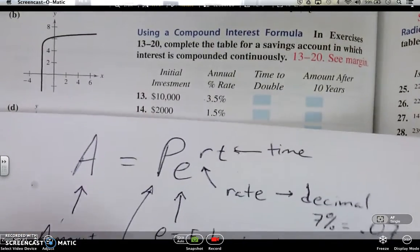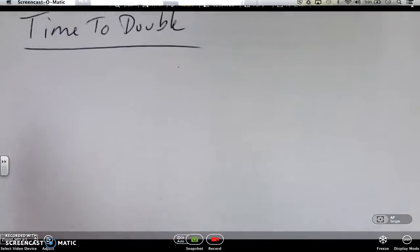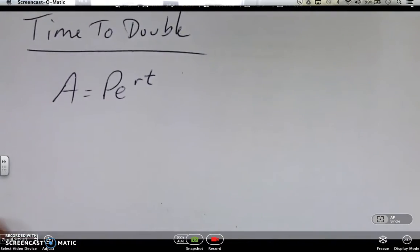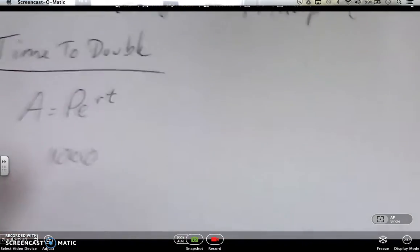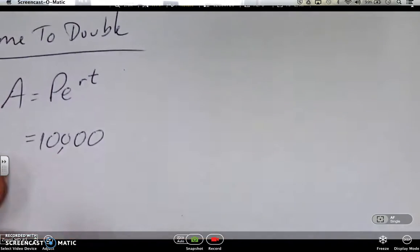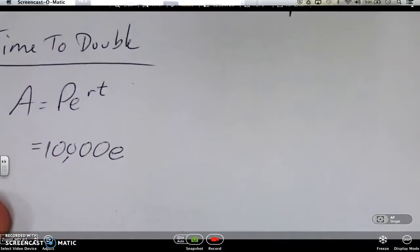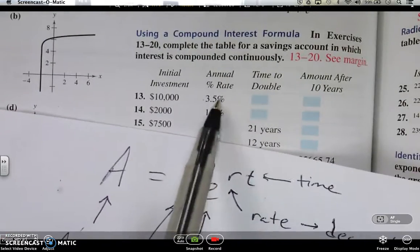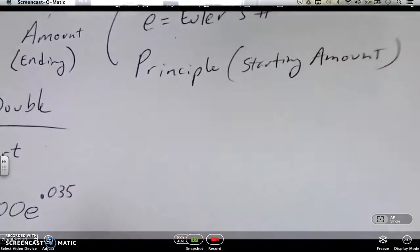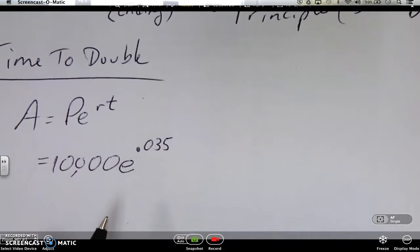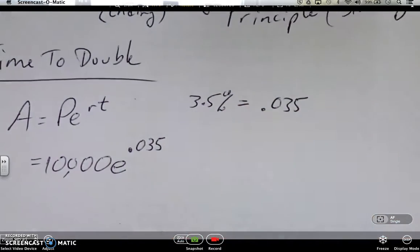First, we're going to do time to double. And I'll bring down my equation again. A equals Pe^(rt). And again, in the equation, $10,000 is our start. So $10,000. E is the button on the calculator. It's a number. It's Euler's number. It's 2.7 something. But again, the calculator is going to give us exactly what it is. Now, here's the key thing. Do not put 3.5 for the rate. That's 3.5%, which as a rate is .035. Because you always move it two decimal places. So 3.5% is really .035 when you're calculating.